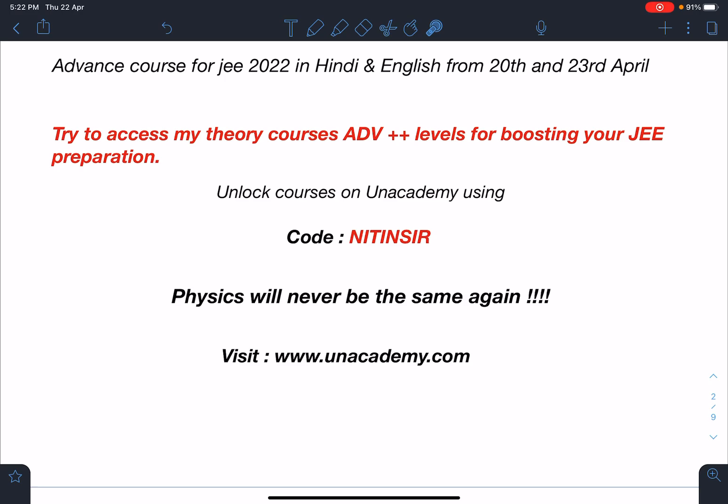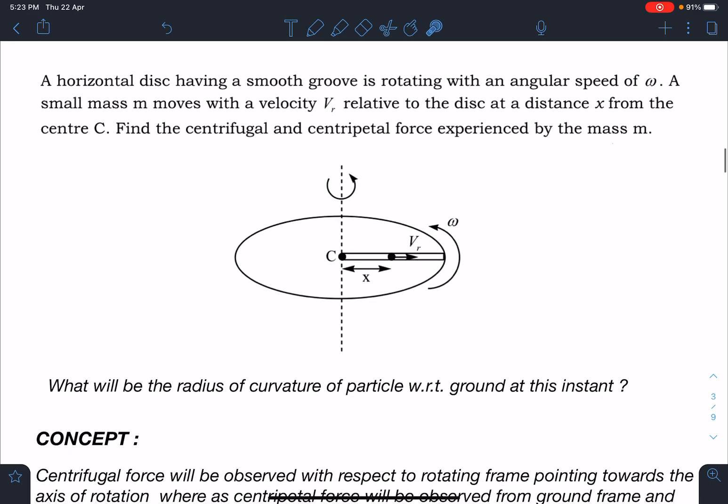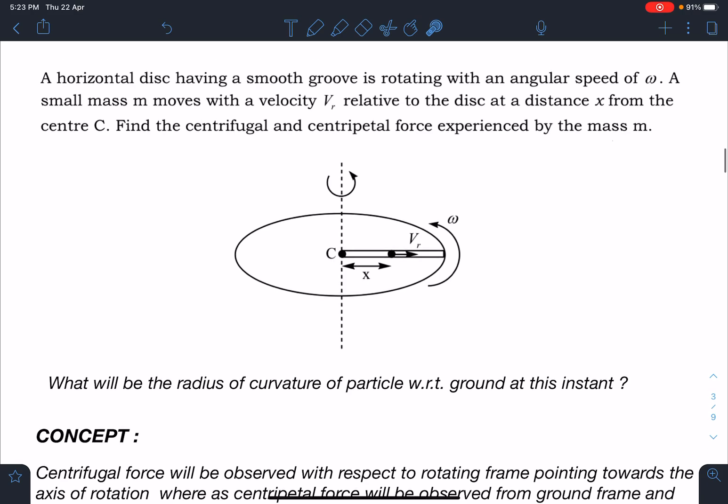Physics will never be the same again. So here is the problem statement: a horizontal disc having a smooth groove is rotating with angular velocity omega. A small mass m moves with a velocity vr relative to the disc at a distance x from the center C. Find the centrifugal and centripetal force experienced by the mass m and also calculate the radius of curvature of particle with respect to ground at this instant.